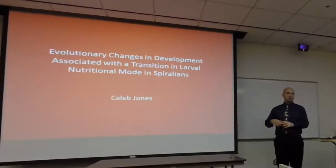The title of my thesis is 'Evolutionary Changes in Development Associated with a Transition in Larval Nutritional Mode in Spiralia.' There is large diversity in animal morphology, and most animals develop from a single fertilized egg or zygote. The diversity we get in body form comes from evolutionary changes in development that result in different body morphologies. So how do we study these evolutionary changes in development?